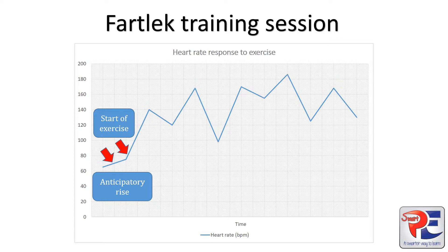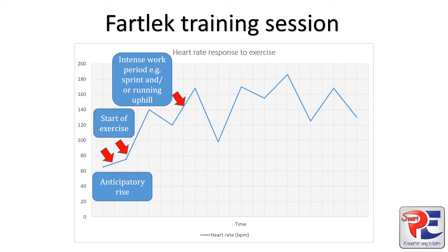The next part of the heart rate graph I want to look at is this increase, which takes the heart rate above 160 beats per minute. Now, although we don't know exactly what is happening in a fartlek training session, our job in the exam is to interpret the graph, which means we have to make sense of or give an explanation of why it is happening. So we can see the heart rate is very high. I can interpret that this is a period of a fartlek session that is very intense in terms of the work demand, and because we're talking about a fartlek session, I know that this intense work period could be from sprinting and/or changing from a flat terrain to an uphill terrain.